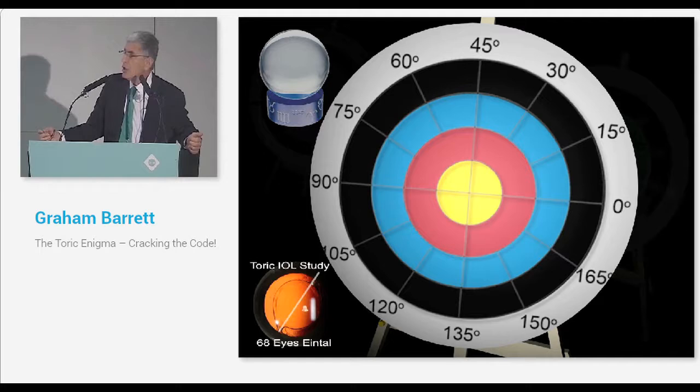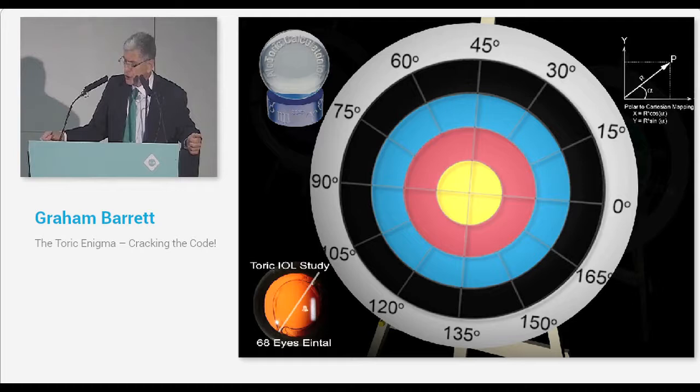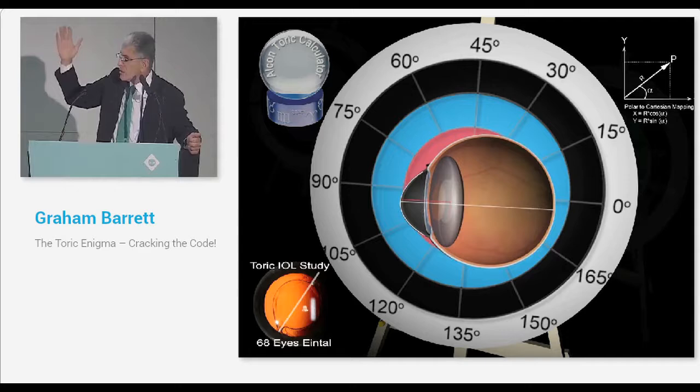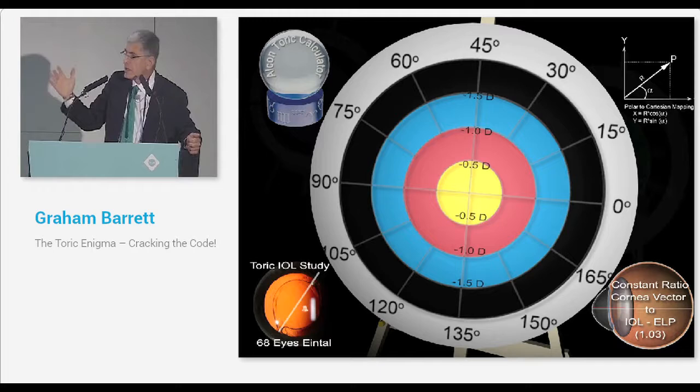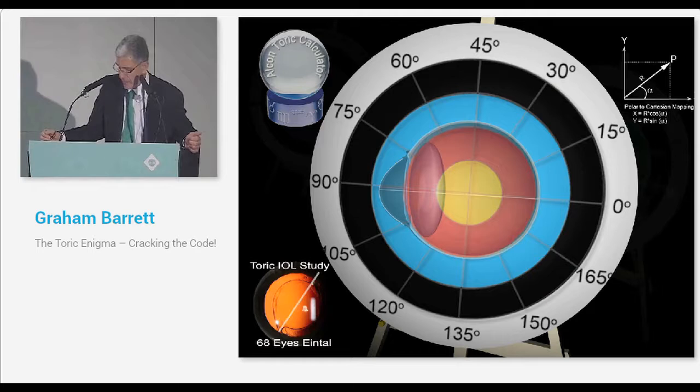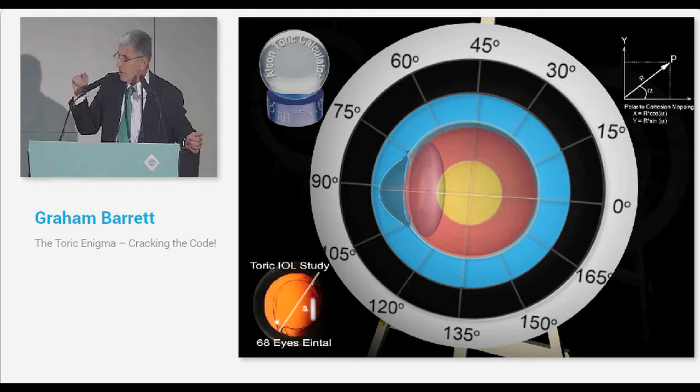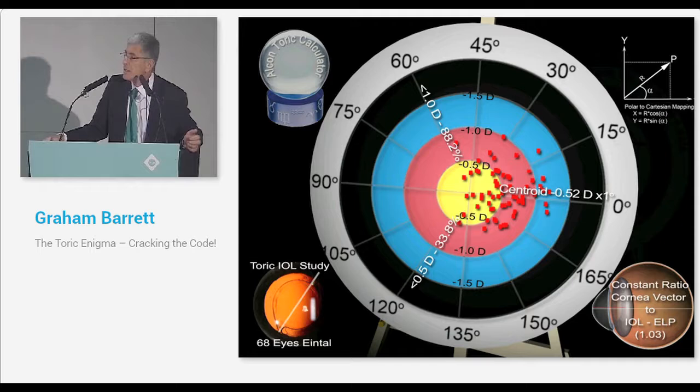Whatever formula you use to predict the toric lens is all based on vector maths, polar-to-Cartesian mapping. But the formulas are different. The Alcon calculator assumes a constant ratio in calculating what the toric cylinder power is at the corneal plane. So it ignores the fact that the lens is going to be sitting in different positions. If you look at the error in predicted outcome, the centroid is about 0.5 diopters against-the-rule, and only about 33% of patients will be within a half diopter of predicted residual astigmatism.